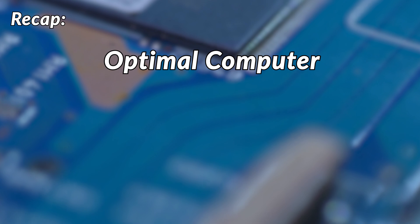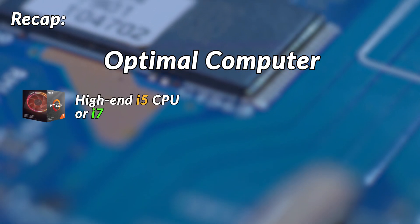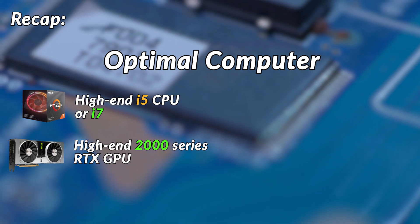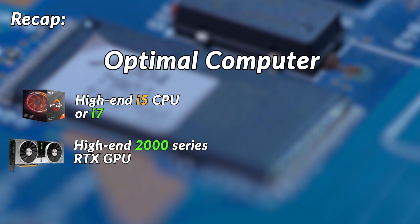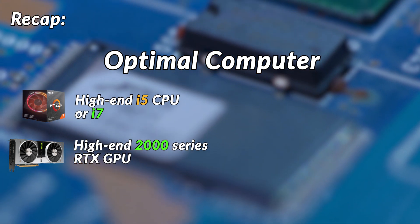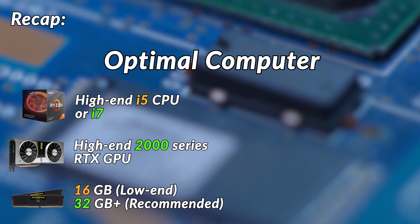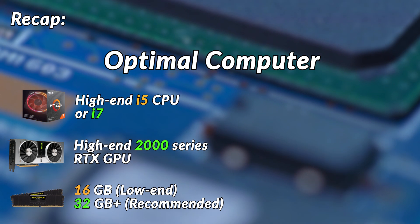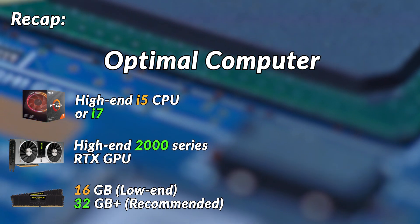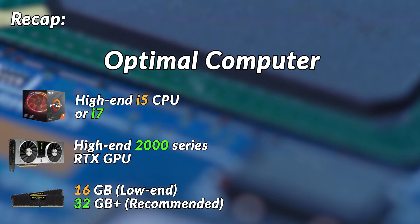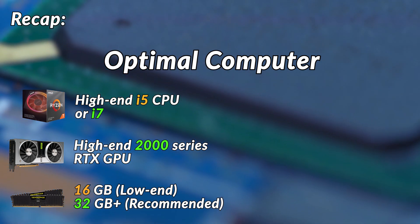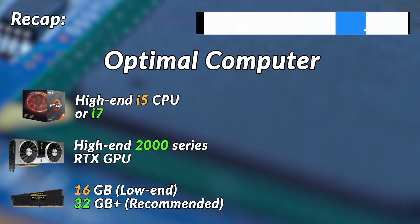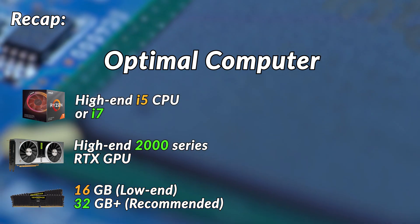Just to recap: you want to look for a computer with at least a high-end i5 processor, preferably a 2000 series RTX graphics card or high-end 1000 series — I personally have the 1070 Ti. For RAM, I'd say minimum 16GB, but I recommend aiming for 32GB or higher. I'll add a few links in the description to certain laptops if you're animating on the go, as well as the computer components I'd recommend.